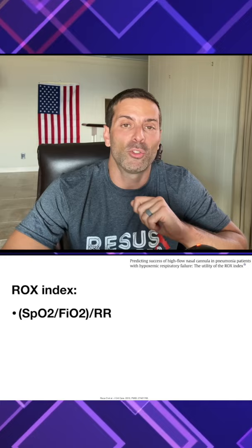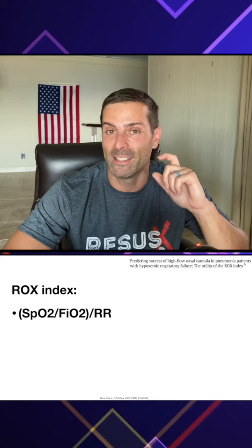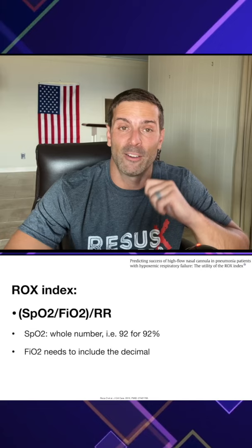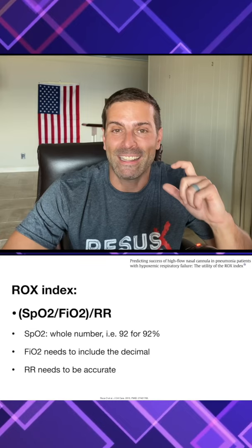The ROX index is an equation — it's the SpO2 over FiO2, and you take that and divide it by the respiratory rate. You have to put these numbers into the calculation correctly for it to work. For example, the SpO2 has to be a whole number, the FiO2 needs to include the decimal, and the most important component is the respiratory rate, which needs to be accurate.